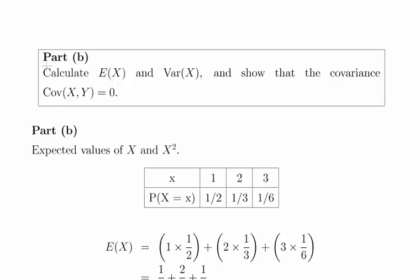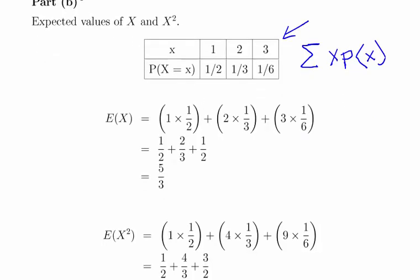Now the next part: calculate the expected value of x and the variance of x, and show that the covariance of x and y is equal to 0. This is quite a long question, so I'll try to get through it very quickly. The first thing we have to do is calculate the expected values of x and x squared. This is just a restatement of the marginal distribution of x — the values of x and the probabilities of those values. So we multiply each of the three values of x by its corresponding probability. That gives us 1 times one half, 2 times one third and 3 times one sixth. When we add them up we get one half plus two thirds plus one half, that is 5 over 3.